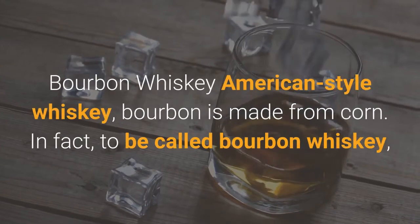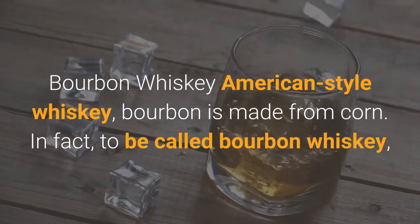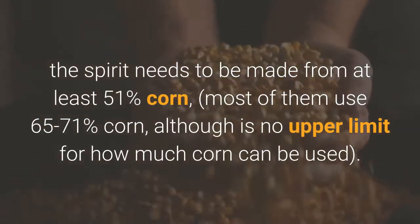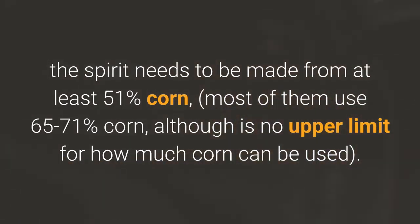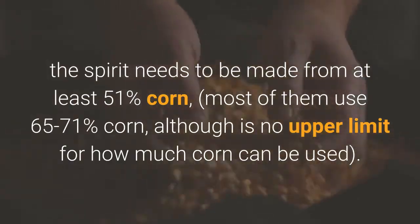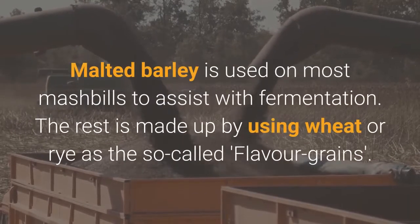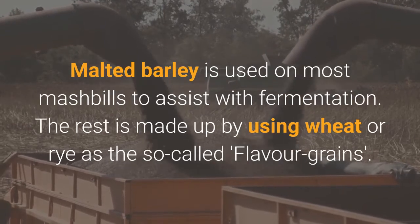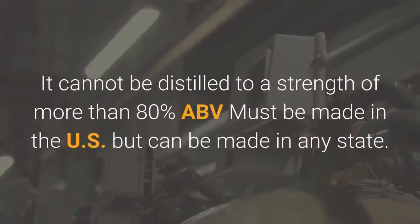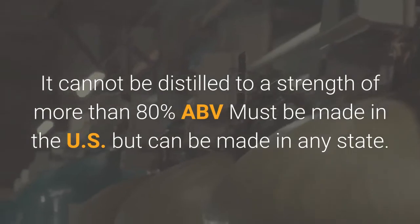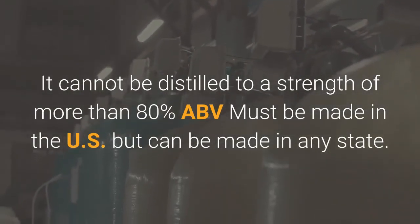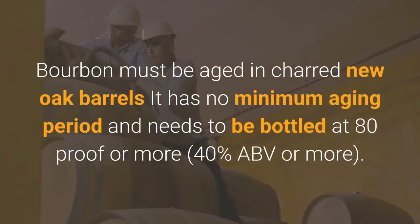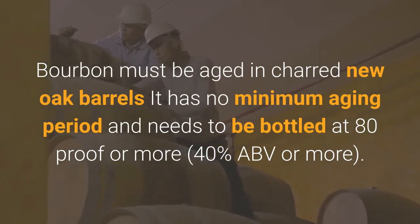Bourbon is an American-style whisky made from corn — in fact, to be called bourbon whisky, the spirit needs to be made from at least 51% corn; most use 65 to 71% corn, although there is no upper limit for how much corn can be used. Malted barley is used in most mash bills to assist with fermentation, and the rest is made up by using wheat or rye as the so-called flavour grains. It cannot be distilled to a strength of more than 80% ABV, must be made in the US but can be made in any state, must be aged in charred new oak barrels, and needs to be bottled at 80 proof or more — that is, 40% ABV or more.